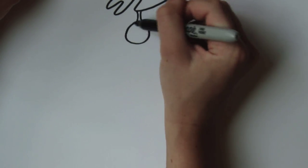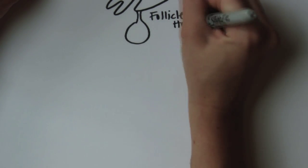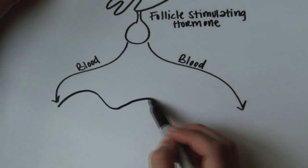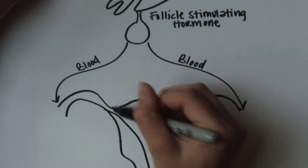We'll start in the pituitary gland at the beginning of the cycle where we find follicle stimulating hormone, or FSH. FSH will travel in the blood to the ovaries where it will stimulate the growth and release of an ovarian follicle.